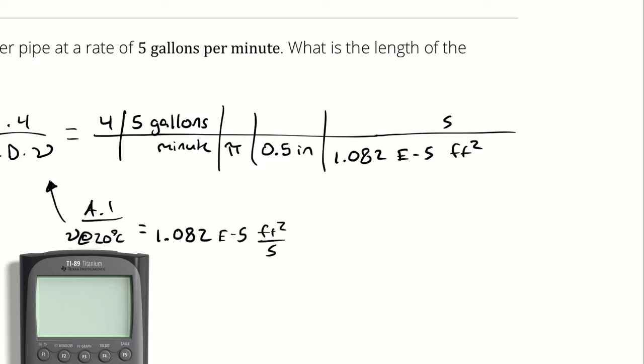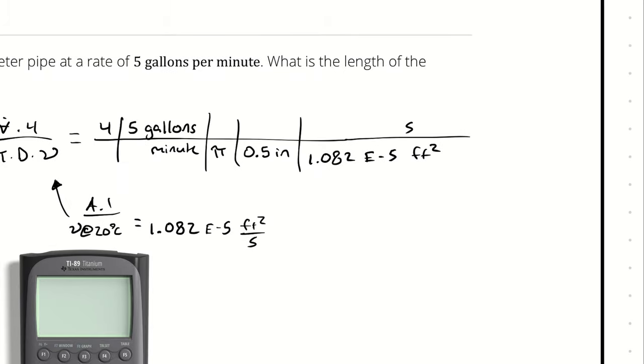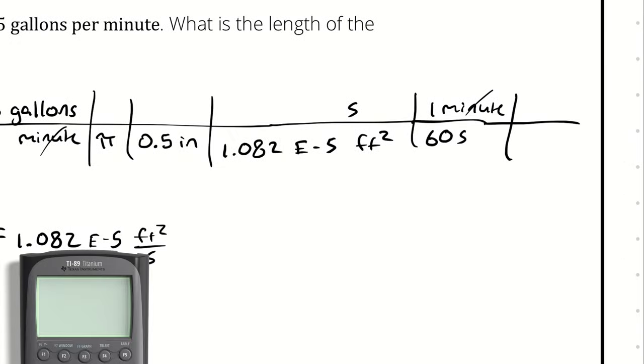Now I can begin to cancel units because I want a dimensionless number at the end. So first I can write 1 minute is 60 seconds. I can write 12 inches in 1 foot.